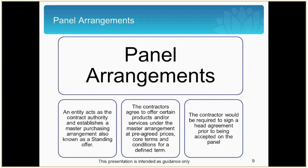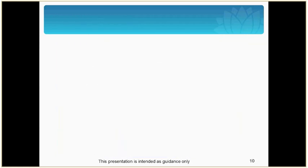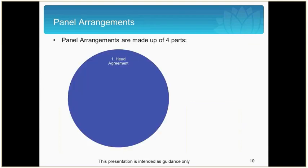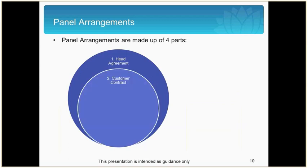We will now look at the four components of panel arrangements under ProcureIT. The first is the head agreement, which describes the relationship between the contract authority and the contractor for the administration of the panel arrangement, including the products and services that can be acquired, how those products and services can be updated during the term of the agreement, which entities are entitled to acquire products and services, and which approved agents can be used by the contractor to supply products and services. The second part is the customer contract, which defines the relationship between the contract authority and the contractor for the supply of products and services.